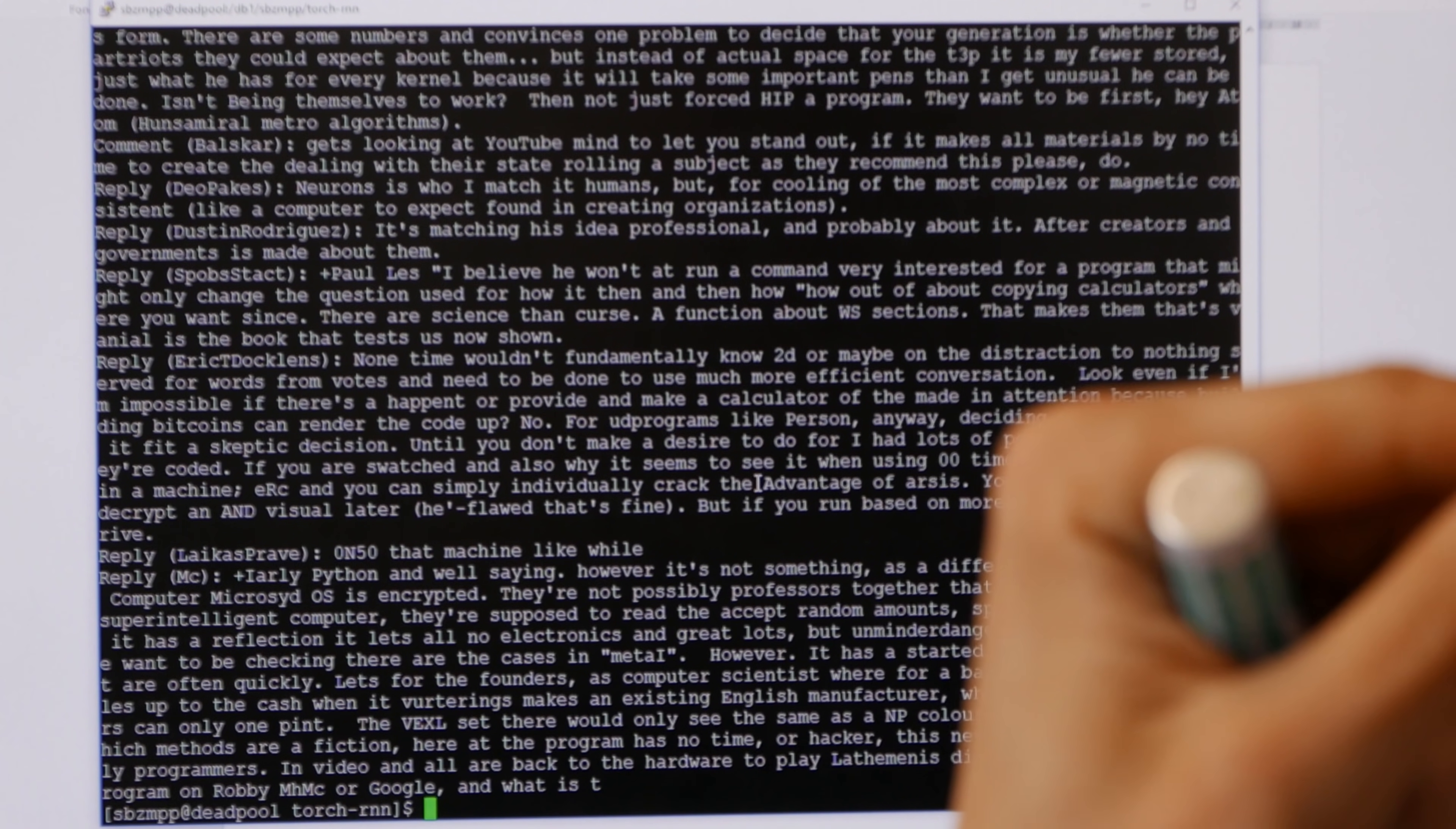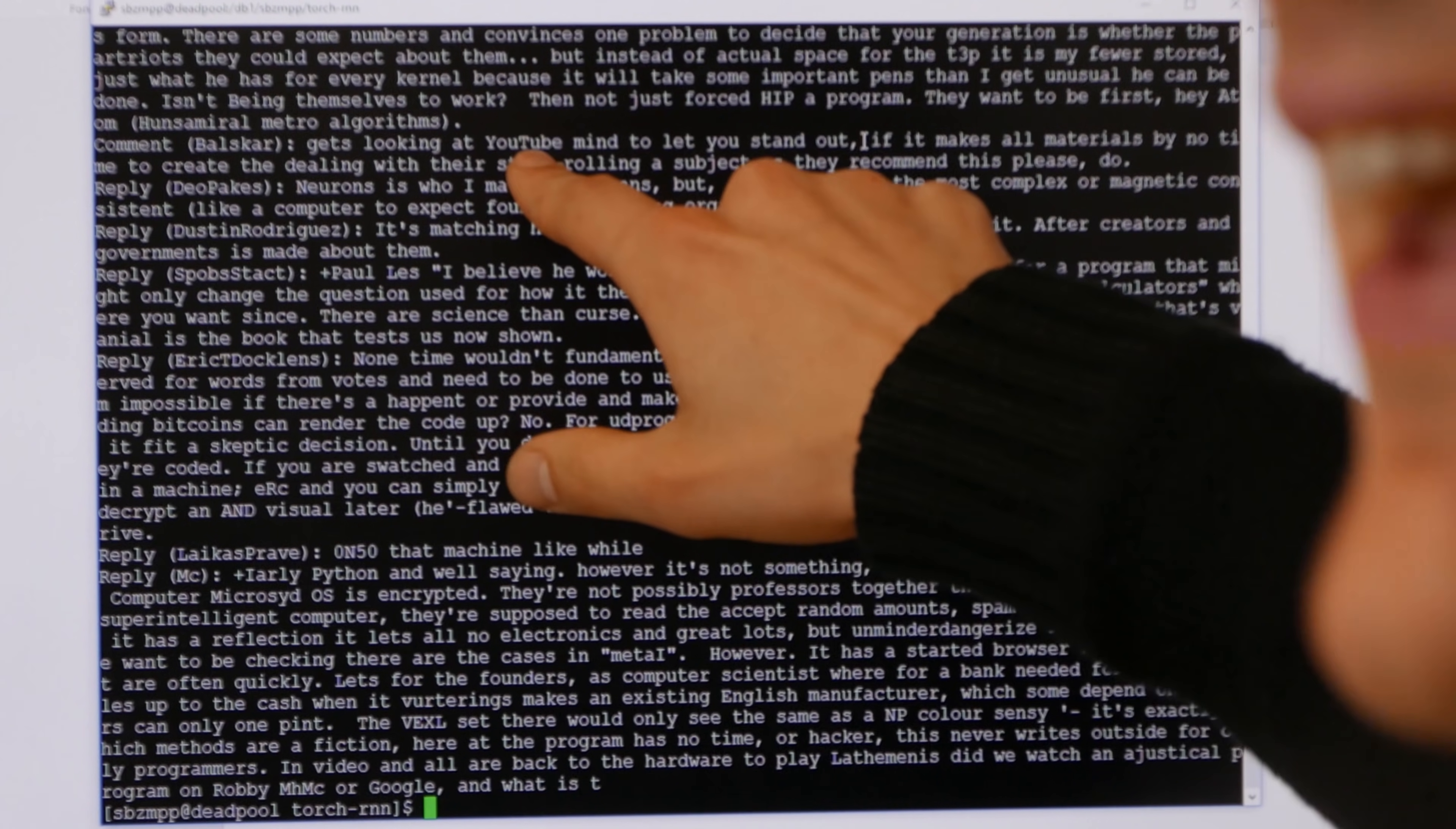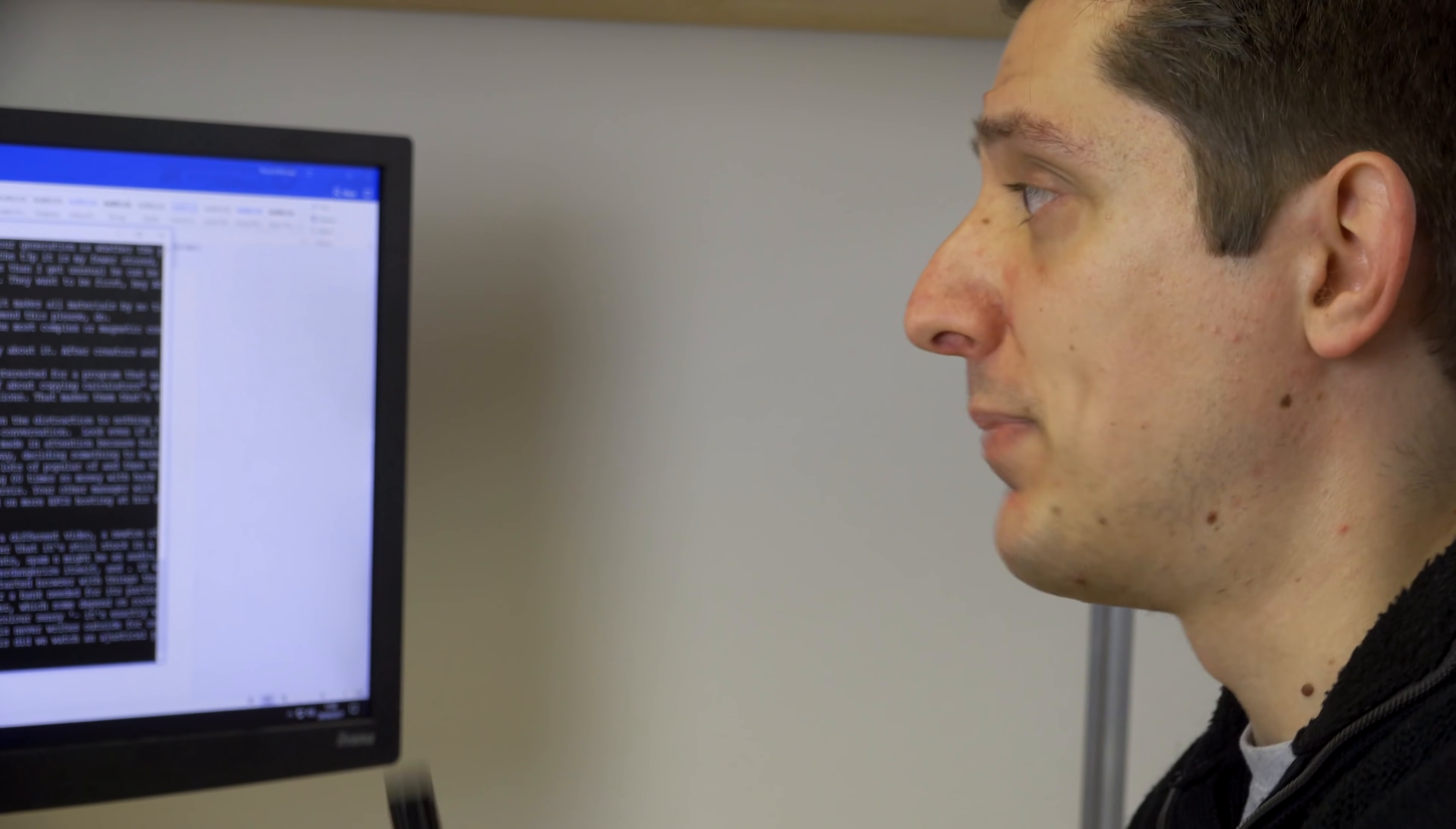There's a long one there. So some of them are very long. 'Neurons is who I match at humans. But for cooling of the most complex or magnetic consistent brackets, like a computer, to expect found in creating organisations.' The interesting thing about this is that sometimes you'll say, 'gets looking at YouTube mind to let you stand out.' Now, the sentence doesn't really make sense, but the words are actually spelt correctly. And YouTube, for example, has a capital Y and a capital T, which is quite clever. It's learned that, usually, when YouTube is seen, there's a capital Y and a capital T. But we're not picking the most likely letter every time. We're picking one of the plausible possibilities. So sometimes it's going to pick the wrong one because of the way we're sampling. So it might say, we've seen a Y-O-U-T-U-B, there's a 99% chance of an E, but there's also a 1% chance of a space. And so it'll put in the space, that 1% of the time. So sometimes you're going to see typos, basically, using this approach.